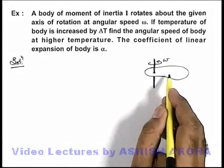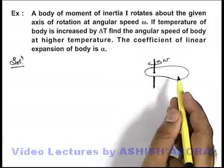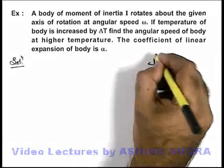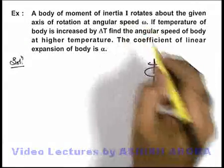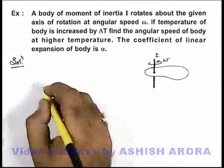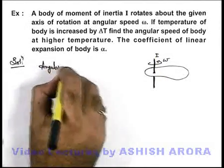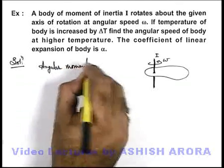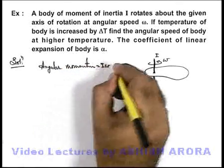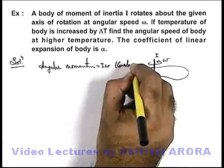Its angular momentum is Iω. Say if I is the moment of inertia of the body which is already given, its angular momentum is Iω that will always remain conserved. So its angular momentum we can write this is equal to Iω which is a constant which won't change with time.